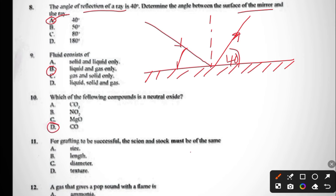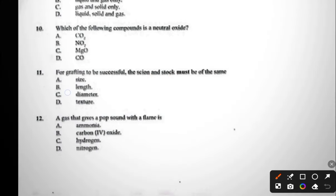Question eleven: for grafting to be successful, the scion and the stock must be of the same size, length, diameter, or texture. The answer to question eleven is C, diameter. Question twelve: a gas that gives a pop sound with flame is ammonia, carbon dioxide, hydrogen, or nitrogen. The answer to question twelve is C, hydrogen.